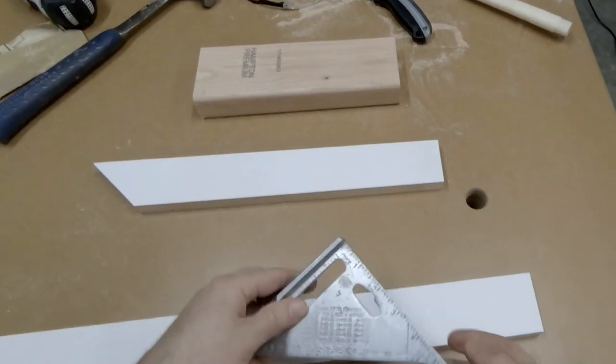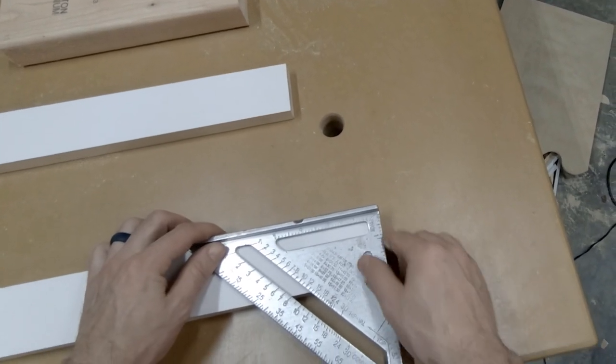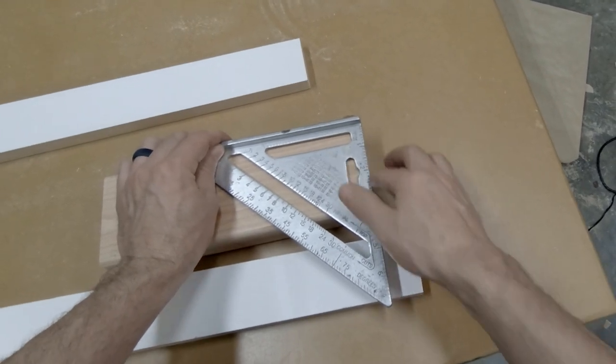So let's just dive in right now and I'm going to show you the first of the five things that are the most common, starting with using it as a square. It's great for checking square at the end of a cut like this. You can do it on finished material like this, or studs, or any framing material as well.